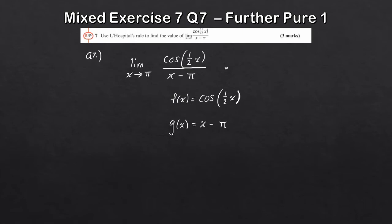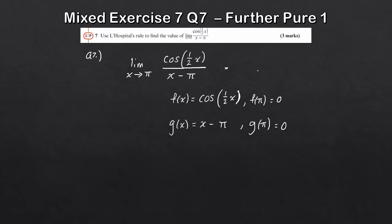Setting up the two functions: f(x) = cos(½x) and g(x) = x − π. We check: f(π) = cos(½π) = 0 and g(π) = π − π = 0, so it's zero over zero — an indeterminate form. We can apply L'Hôpital's rule. Differentiating g(x) = x − π gives g′(x) = 1, so we'll only need to apply the rule once, regardless of what f′(x) comes out as.